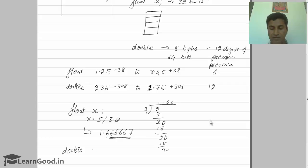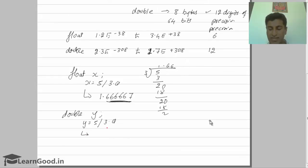If you take a double variable and give the same expression, y equals five divided by 3.0, then y will hold a value of 1.666666666666, twelve decimal digits. That's the main difference between float and double.